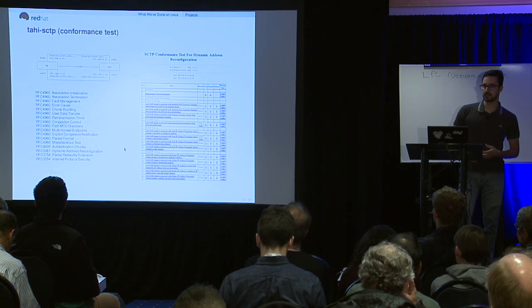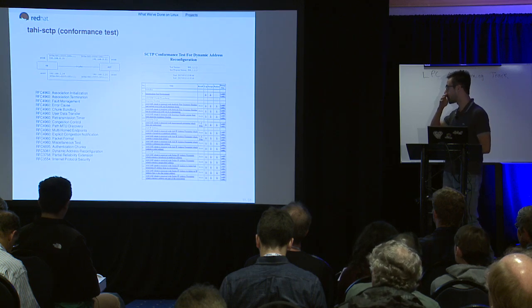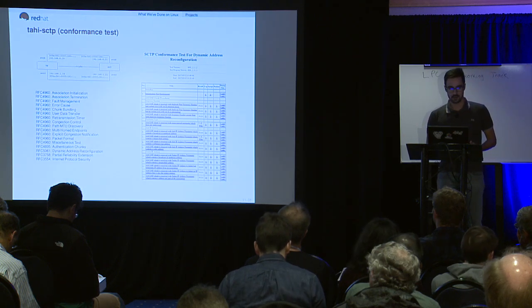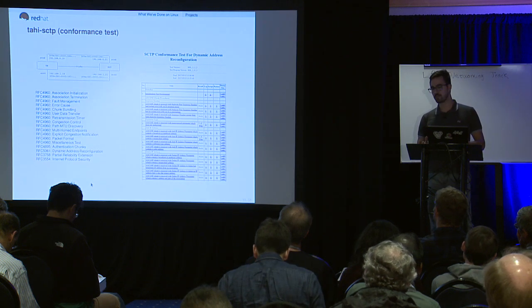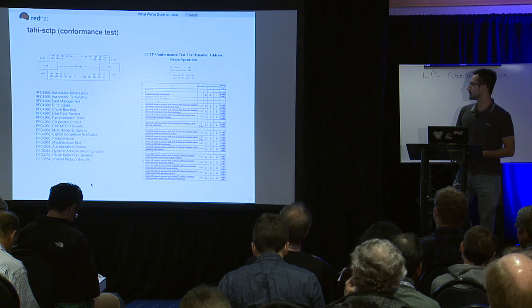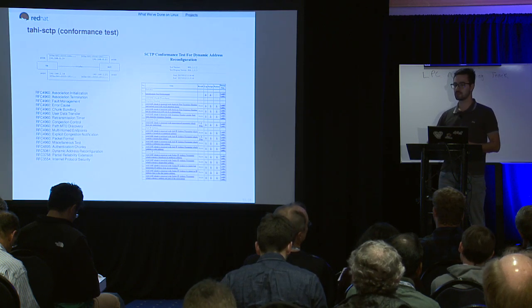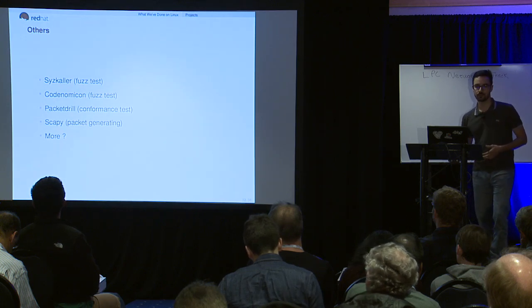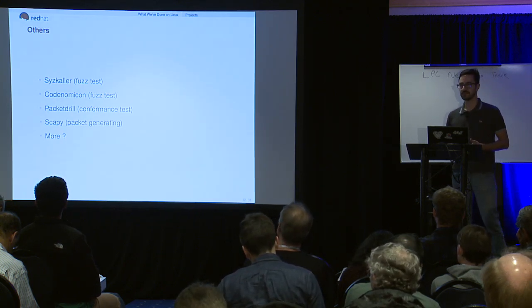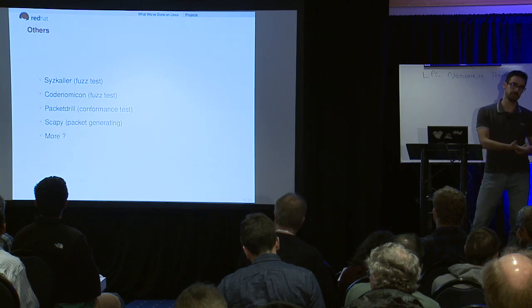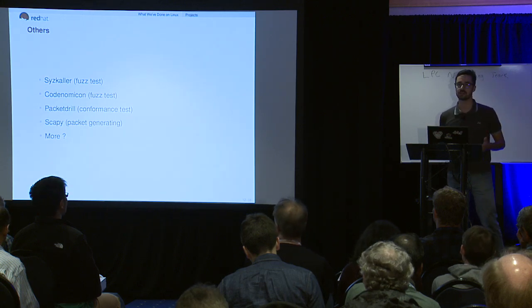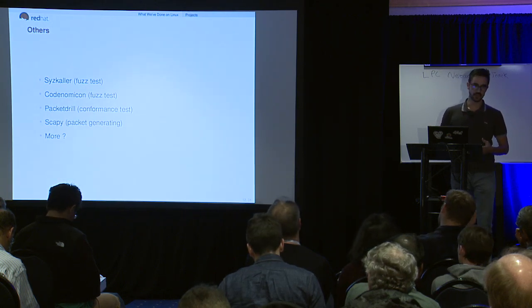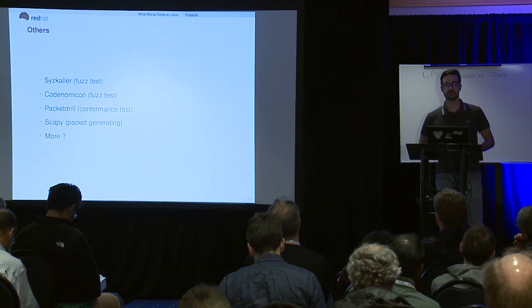This is a node conformance suite. It tests if the implementation you have is in accordance with the RFC, tests all these features, and provides a conformance report. That's how we know the implementation is in conformance with the RFCs. We also have SysColor and Codenomicon, which are fuzz tests. Codenomicon does fuzzing from the network side — it injects weird packets, and hopefully we don't crash. Packetdrill and Scapy are used to generate packets and check the responses.